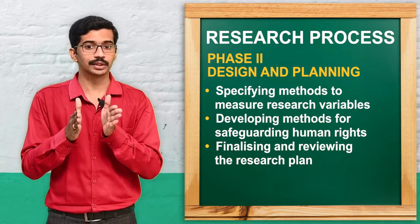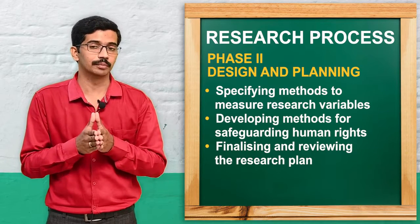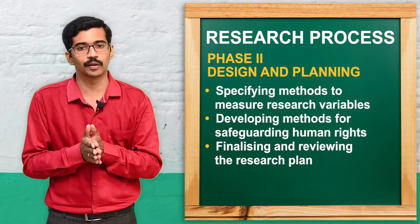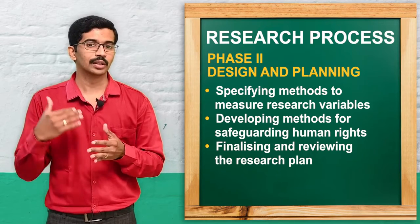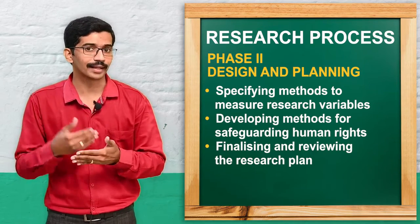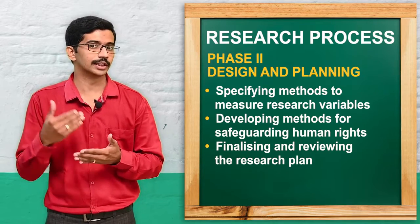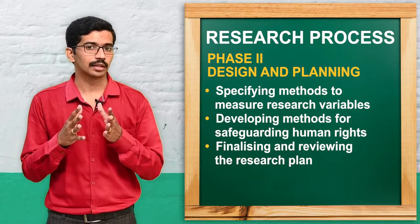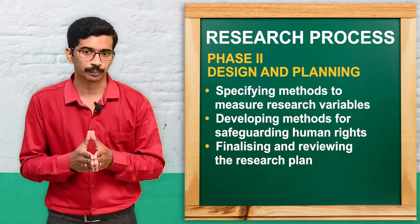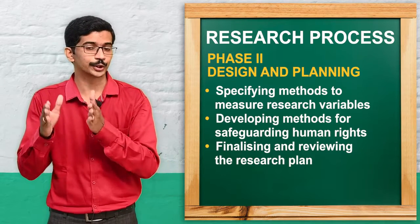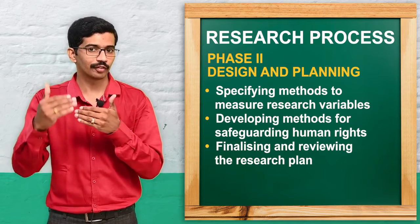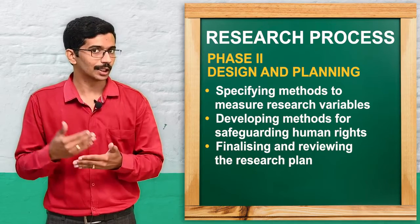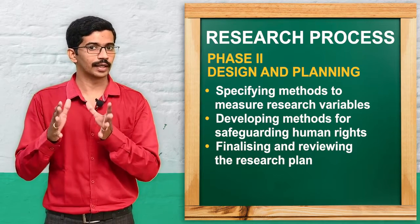The next step is developing methods to safeguard subjects, which is very important because research may involve human beings. We must ensure their human rights and confidentiality through informed consent and approval from the ethical committee of the institution. Finally, there is finalizing the research plan, where the plan is tested through a pilot study before proceeding to the final study.